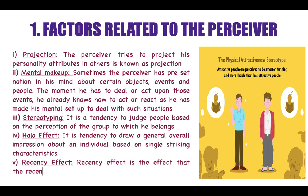The fifth factor related to the perceiver is the recency effect. The recency effect is the effect that a recent event has on the perceiver. For example, during performance appraisal, employees are rated on the basis of their latest performance and the earlier performance is ignored. This is not a satisfactory method, so it leads to errors of perception.